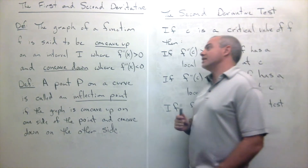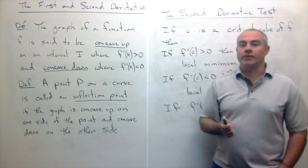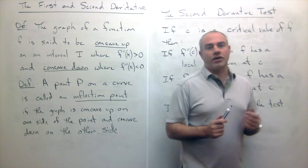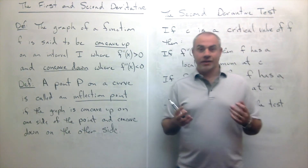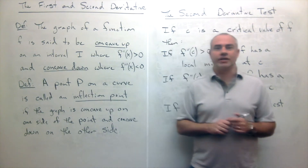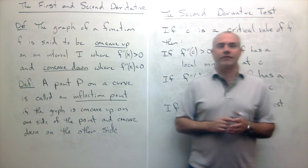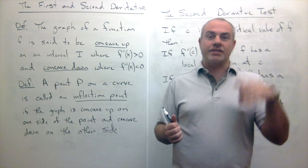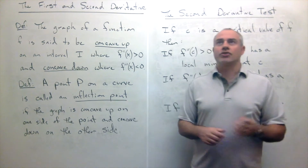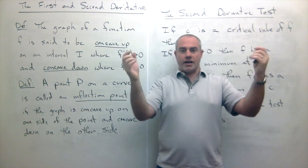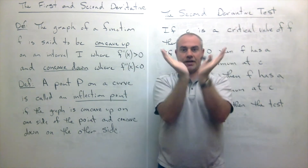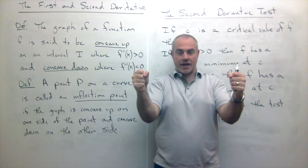Our next definition is about concavity. We can talk about a function being concave up or concave down. The way I like to think about concavity is that it's the way the function bends — are you bending up or bending down? In terms of position, velocity, and acceleration, which direction is the particle accelerating — up or down? If I had a thin bar and I start bending it upward, it's concave up the whole way. If I bent that bar down, we would say it's concave down.